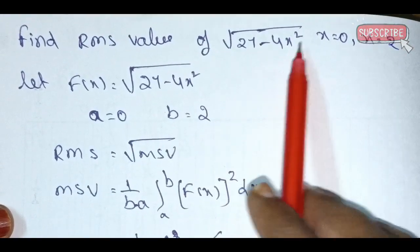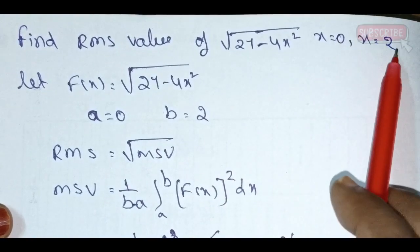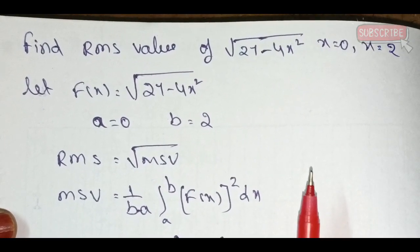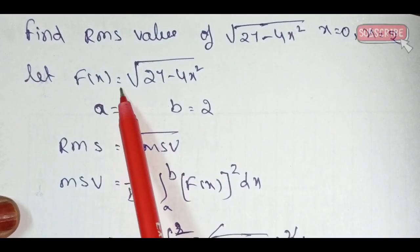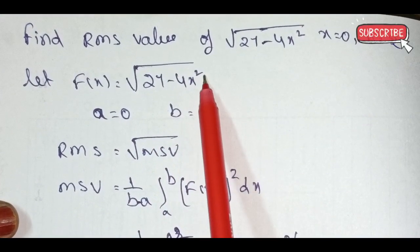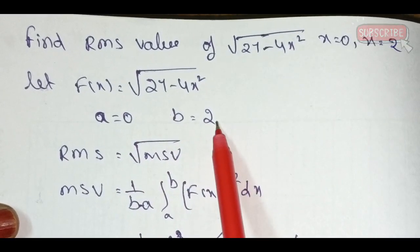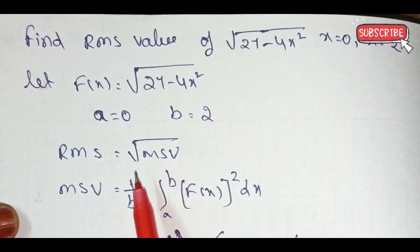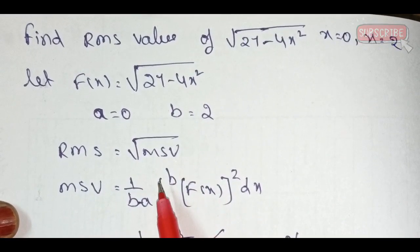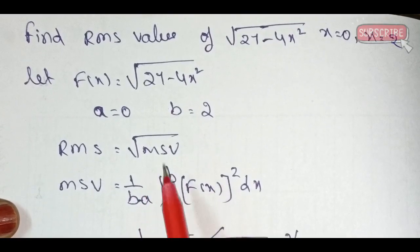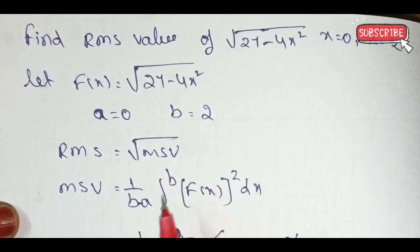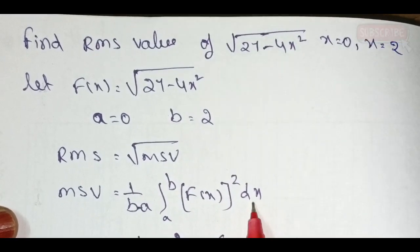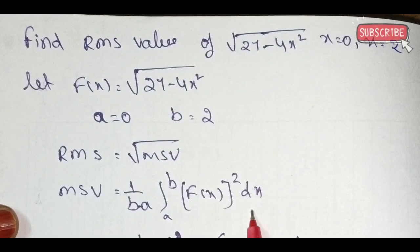Next problem: f(x) = √(27 − 4x²), with range x = 0 to x = 2. Find the RMS value. RMS equals root over mean square value, so first find MSV. The MSV formula is 1 by (b minus a), integral from a to b of [f(x)]² dx.